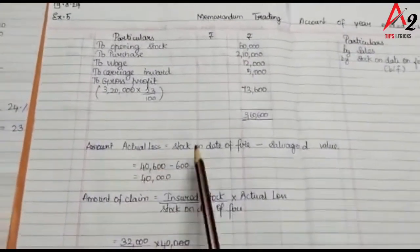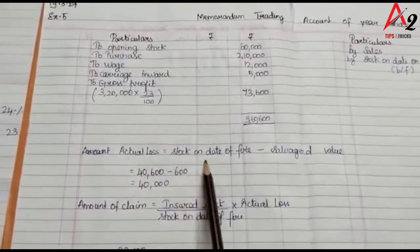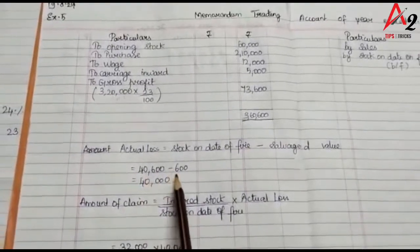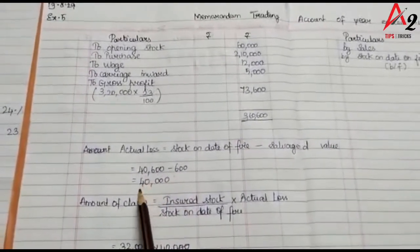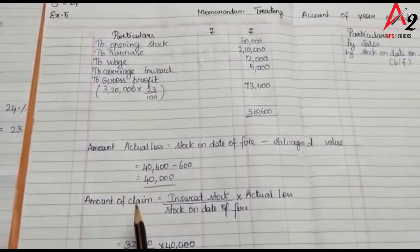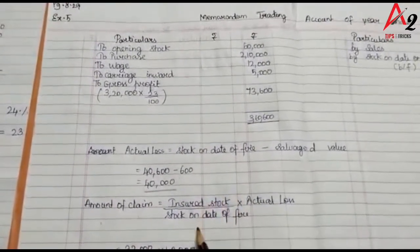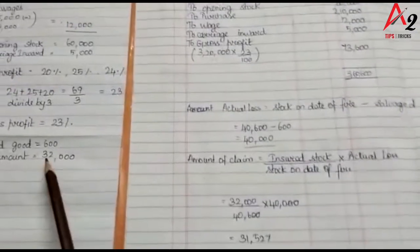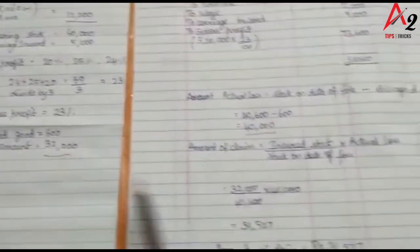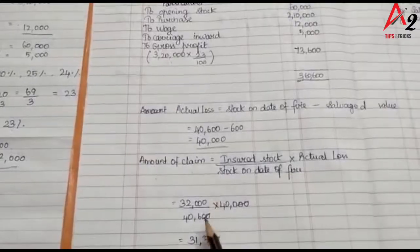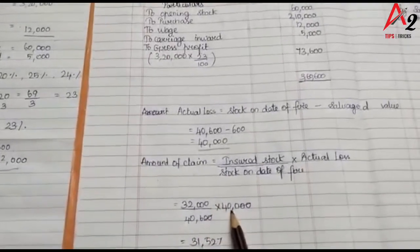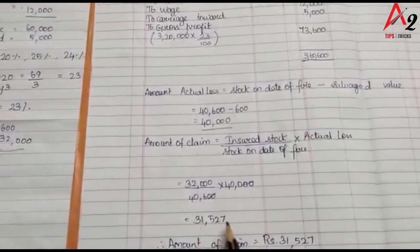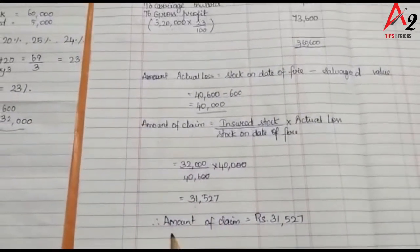Actual loss formula: Stock on date of fire minus salvage value = $40,600 minus $600 = $40,000. The amount of claim formula is: Insured stock divided by stock on date of fire, multiplied by actual loss = $32,000 / $40,600 × $40,000.